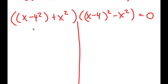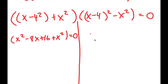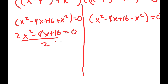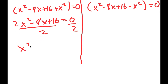(x minus 4) squared is equal to x squared minus 8x plus 16. So I have x squared minus 8x plus 16 plus x squared is equal to 0. This is one equation. I also have x squared minus 8x plus 16 minus x squared is equal to 0, giving me 2x squared minus 8x plus 16 is equal to 0. Dividing both sides by 2, I get x squared minus 4x plus 8 is equal to 0.